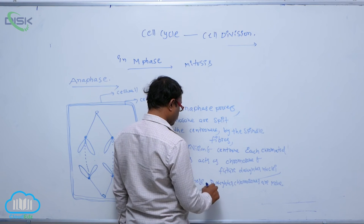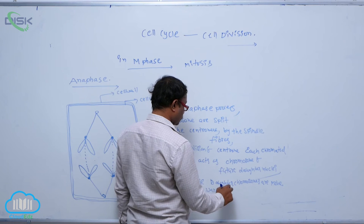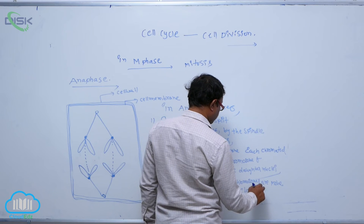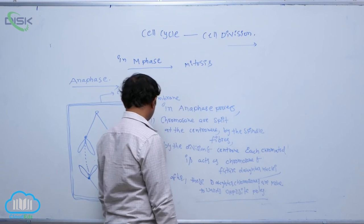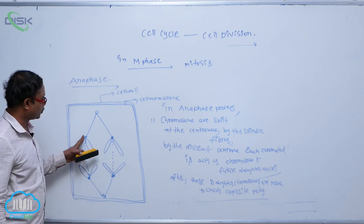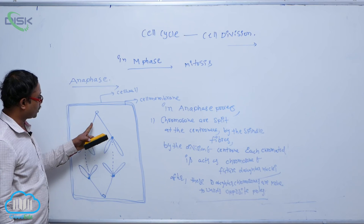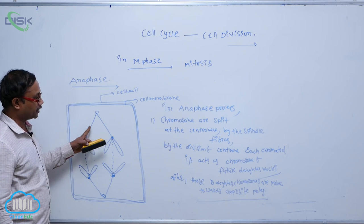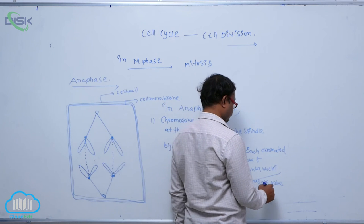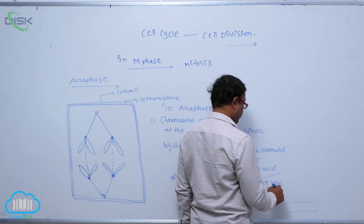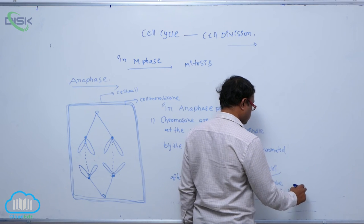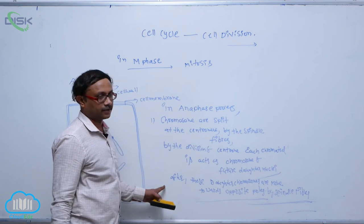These daughter chromosomes move towards the opposite poles. When the division of the centromere occurs, the daughter chromosomes are moved towards the opposite poles by the spindle fibers.